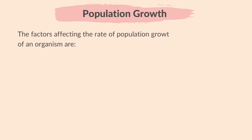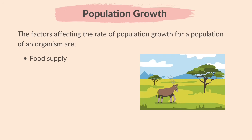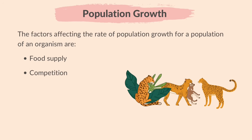The factors affecting the rate of population growth for an organism are: Food supply — food supply directly impacts population growth. When there is plenty of food, populations grow, but when food is limited, population growth slows down. Competition — all living organisms compete with each other for limited resources such as food, water and living space.